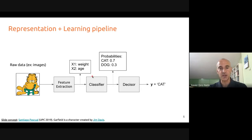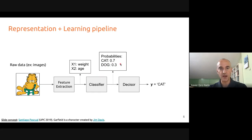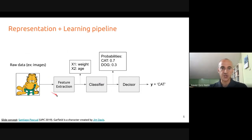The output of these classifiers is typically a probability for each of the two classes. In this case, for cats or dogs, you get a probability that the animal belongs to the cat class or the dog class. For a classification problem, we typically take the class with the highest probability — for example, the label cat. This pipeline of feature representation followed by a learning step is what classical machine learning has been doing for a long time.